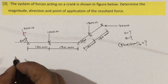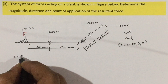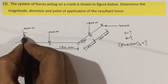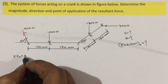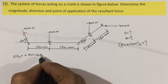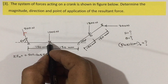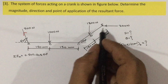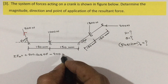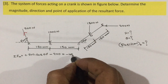Next step is sigma Fx and sigma Fy. For sigma Fx, that is given by horizontal force and horizontal component. The horizontal component is moving rightward, so positive: F cos theta = 500 × cos 60°. The other forces are vertical, so leave them. The horizontal 700 Newton force is leftward, so minus 700. Calculating, sigma Fx = minus 450 Newton.